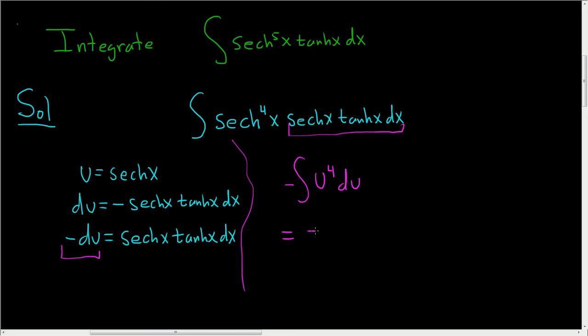Integrating using the power rule, this is negative u to the fifth over 5 plus c. And this is equal to the hyperbolic secant to the fifth power of x divided by 5 with the minus sign plus our arbitrary constant c.